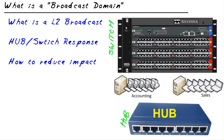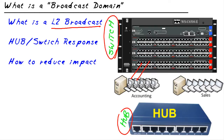Terms like layer 2 VLANs or layer 2 broadcast domains get thrown out there so commonly. I wanted to pause in this micronugget and focus on exactly what they are and how they operate. To really understand what a broadcast domain is, we should first take a look at what exactly is a layer 2 broadcast. A switch is called a layer 2 switch because it memorizes the layer 2 hardware address on each device burned in from the factory, and can make forwarding decisions based on those layer 2 addresses.